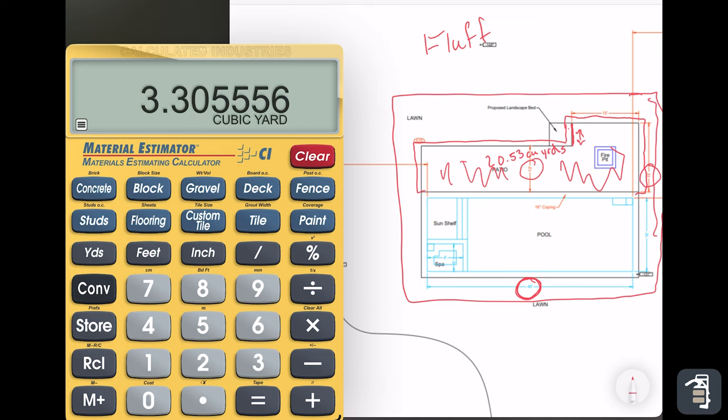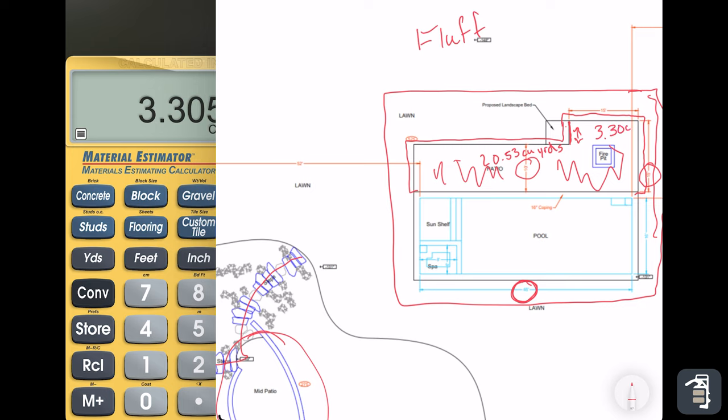That's going to give us 3.14. Again, we have to add our five percent to that, which is now going to give us 3.30 cubic yards. So 3.3 plus the 20.53 plus 3.30, we're going to add those. So we have 23.83 cubic yards of material that we're going to be hauling off-site and also hauling back in.